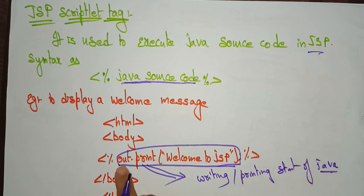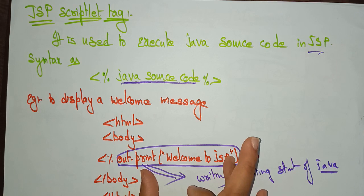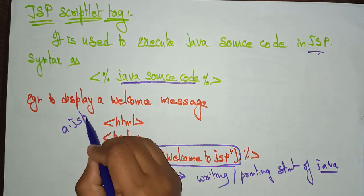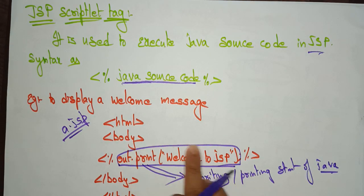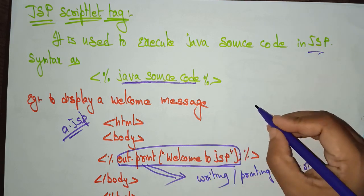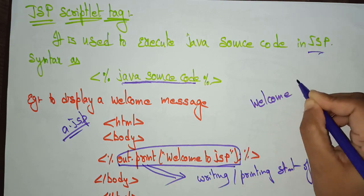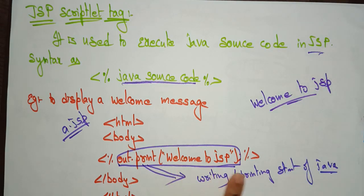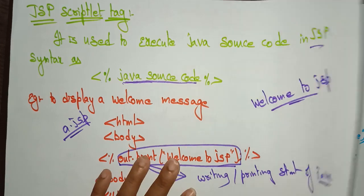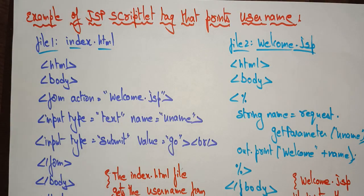In Java, you use out.print. I am using that Java source code in the JSP file — suppose a.jsp. In this JSP file, I am executing the Java source code: out.print('Welcome to JSP'). So the output displayed on the screen is 'Welcome to JSP'. This is the output because out.print is a printing statement of the Java source code.